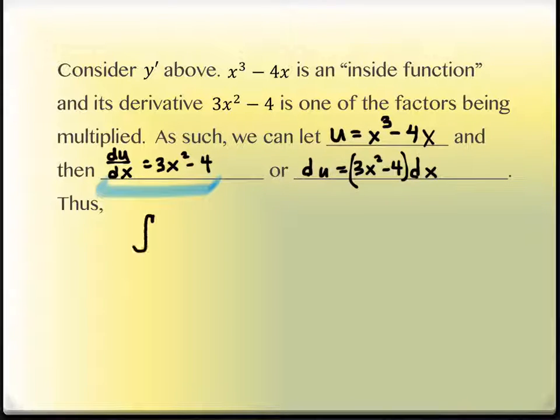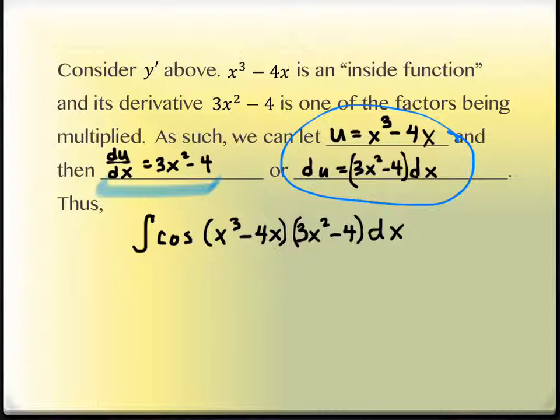Thus, when you have the integral of cos(x³ - 4x)(3x² - 4)dx, what you're doing is identifying the pieces from here that can be substituted down here. In particular, right here in the middle, what's another name for x³ - 4x? u. So instead of writing x³ - 4x, I'm going to write cos(u).